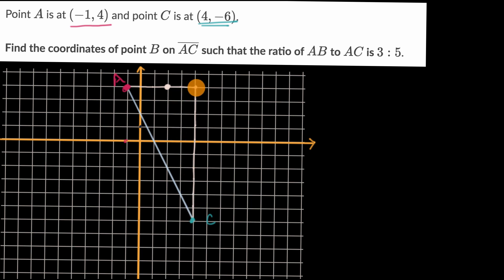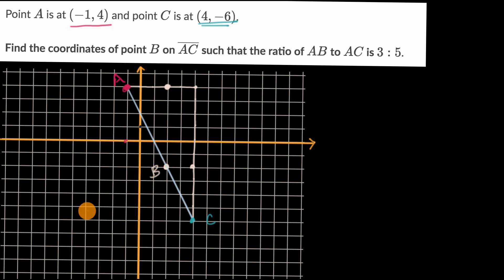So B's Y coordinate is going to be six down. Just like that, we were able to figure out the X and Y coordinates for point B, which would be right over here. This looks like two comma negative two, which we were able to do with the graph paper.